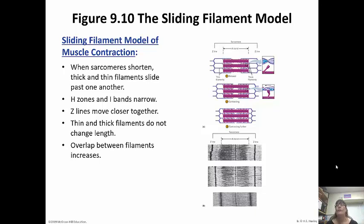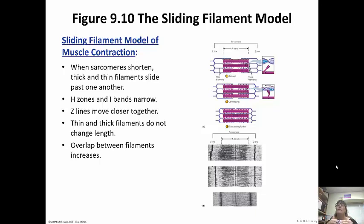Looking at the pictures: the top picture shows a muscle at rest, so the Z-lines are pretty far apart. In the second picture it's starting to contract, so the Z-lines are closer together and the actin and myosin are starting to overlap more, and the H-zone is very narrow. In the bottom one, that's a fully contracted muscle where the Z-discs are as close together as they can get, the actin and myosin filaments are as overlapped as they're going to get, and the H-zone is almost non-existent. Remember the actin and myosin filaments aren't changing length — they're just sliding over each other.